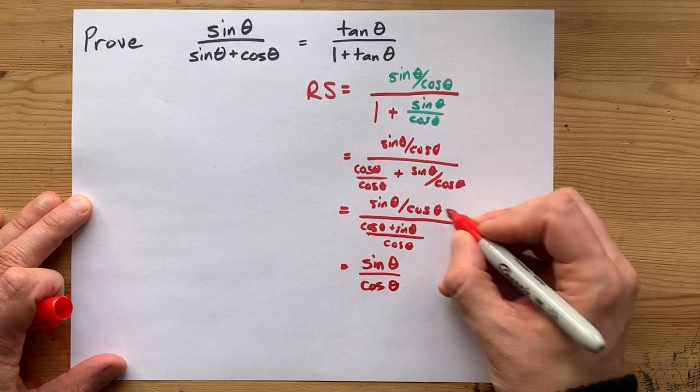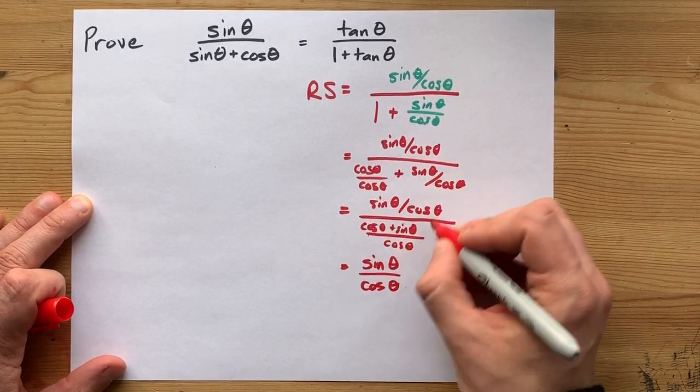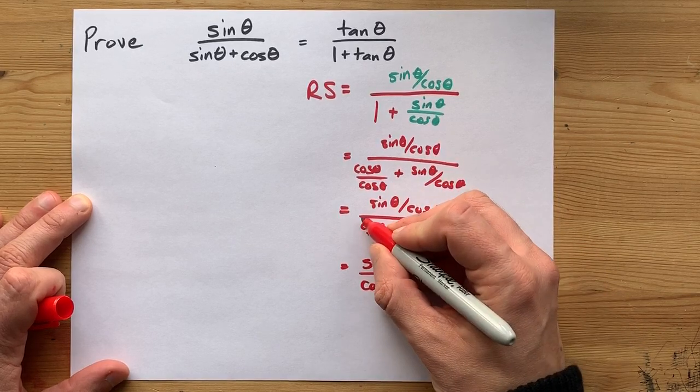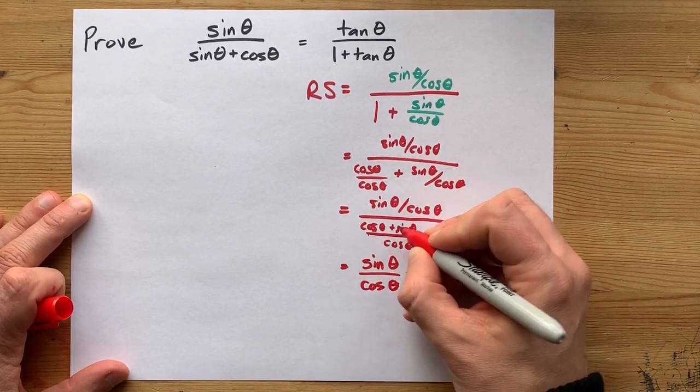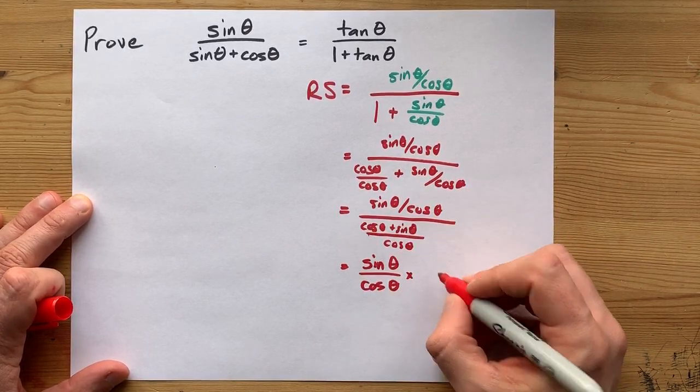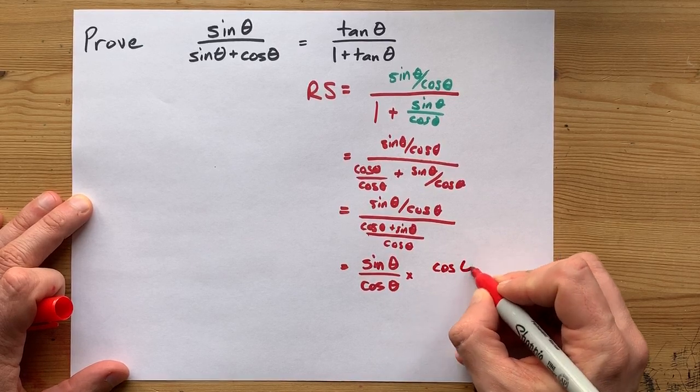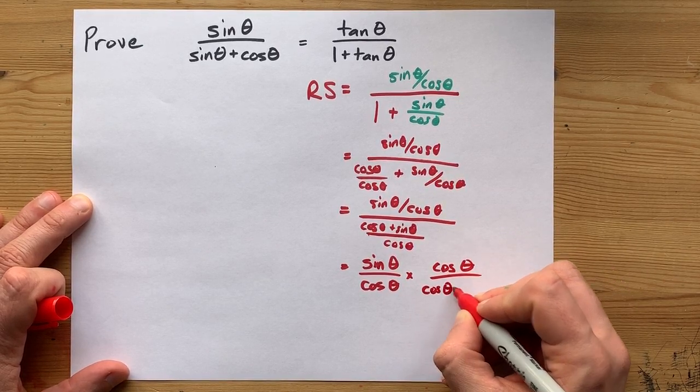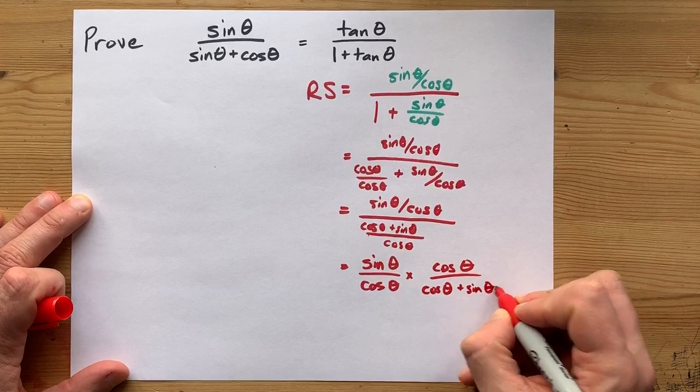Here's my sine over cos. Here's my sine over cos from the numerator of this big fraction. Dividing becomes multiplication as long as this flips, so it becomes cos over cos theta plus sine theta.